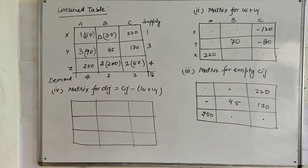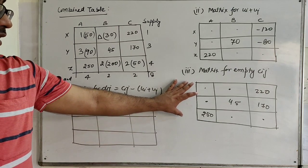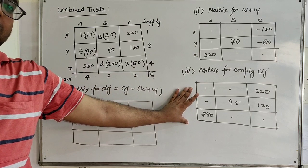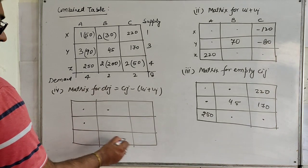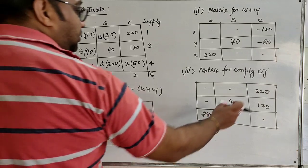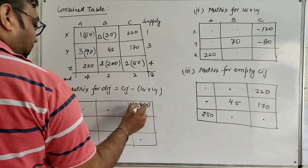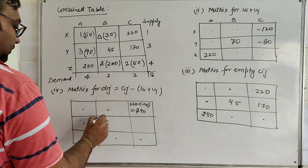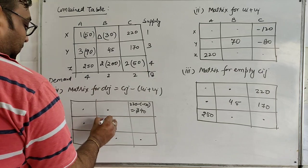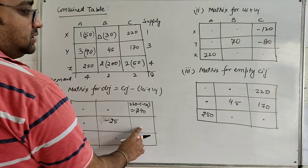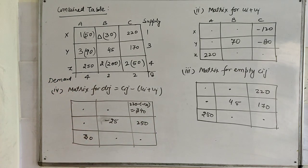Now the last step: matrix for D_ij = C_ij minus (U_i + V_j). We subtract each corresponding element. Put dot where dot exists. For cost 220: 220 minus (−120) = 340. For cost 45: 45 minus 70 = −25. For cost 170: 170 minus (−80) = 250. For cost 250: 250 minus 220 = 30. Now, one element is negative — that is the cell with cost 45 giving D_ij = −25.